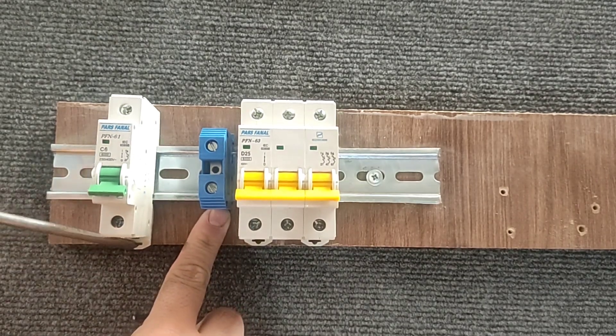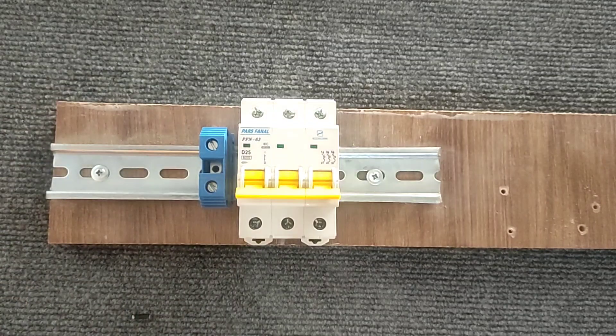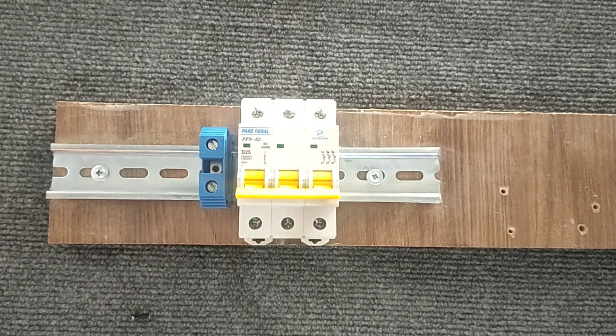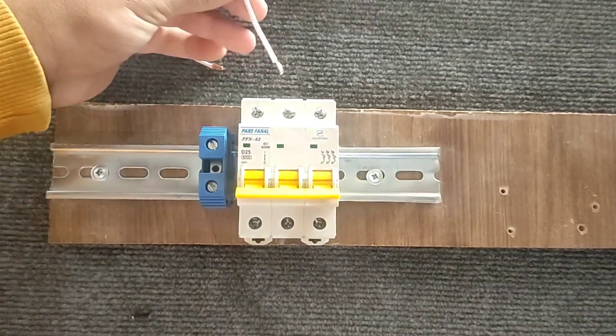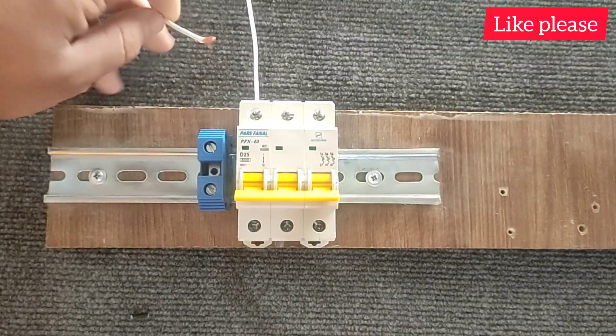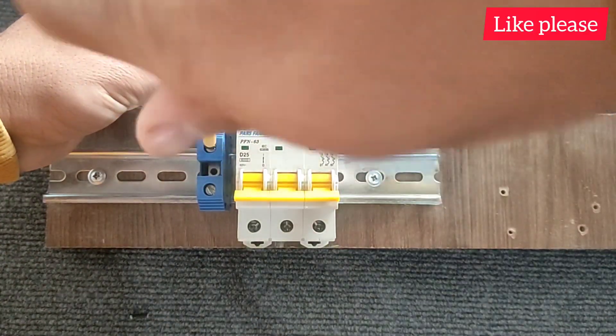Single phase electricity consists of a phase wire and a null wire. In the first method we connect the phase wire to one of the miniature switch blades and connect the null wire directly.